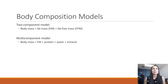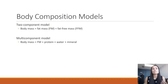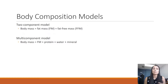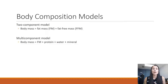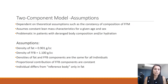The multi-component model is a little bit more detailed. Similarly, it says that body mass is fat mass plus fat-free mass, except it actually measures components of what that fat-free mass is made up of, which includes protein, water, and mineral. In many cases, what we use nowadays is the multi-component model rather than the two-component model to come up with the actual number of body fat percentage. Let's spend a little bit more time on each.